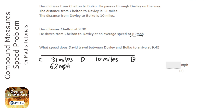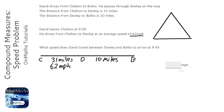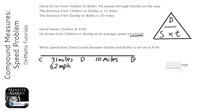So we need to understand the speed-distance-time triangle, which I can quickly draw here. You just have to remember distance at the top, speed and time — it doesn't matter which way around. You cover up the one you're looking for and it shows you how to do it.